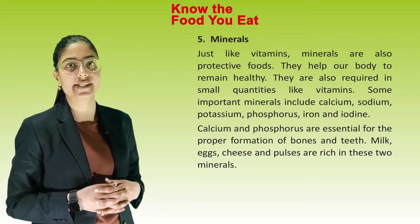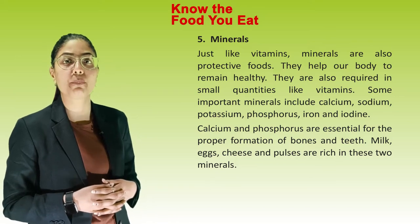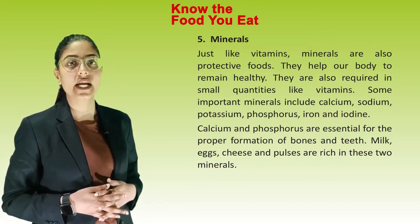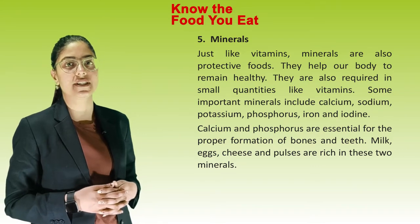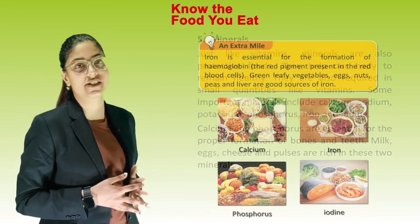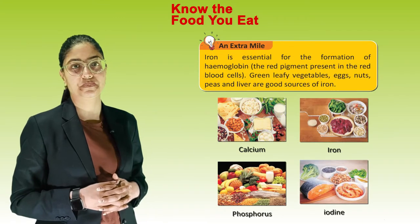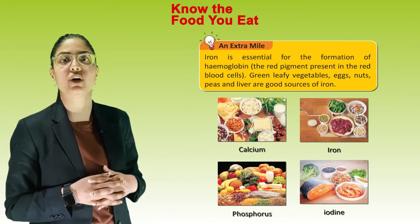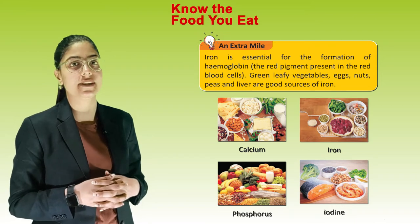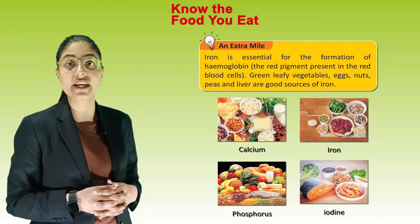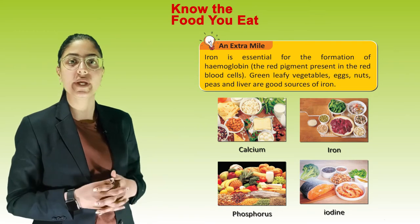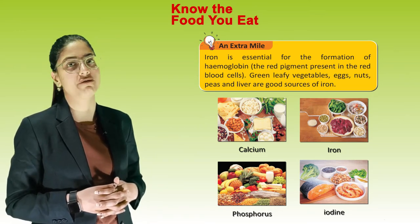Calcium and phosphorus are essential for the proper formation of bones and teeth. Milk, egg, cheese and pulses are rich in these two minerals. Iron is essential for the formation of hemoglobin, the red pigment present in red blood cells. Green leafy vegetables, eggs, nuts, peas and liver are good sources of iron.